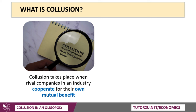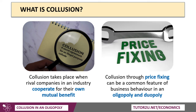Collusion takes place when rival companies within an industry cooperate or collude for their own mutual benefit. It's a common feature of business behaviour in imperfect competition, such as oligopoly and duopoly.